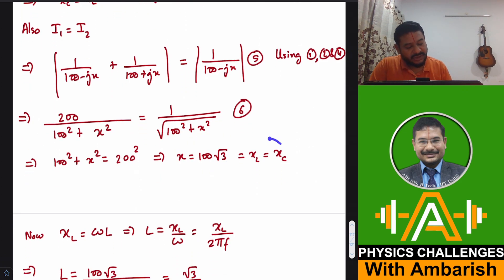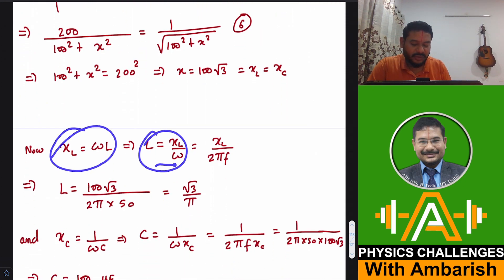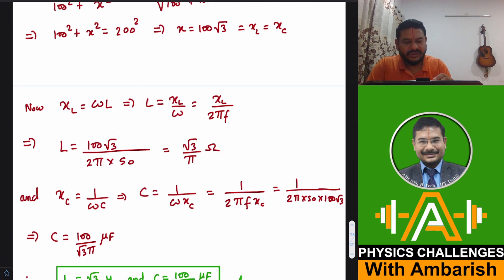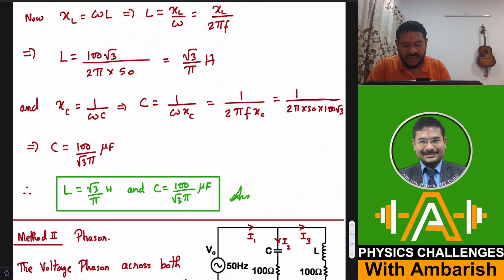So X comes out to be 100 root 3. So therefore reactance of inductor as well as reactance of the capacitor are 100 root 3. Now it's just a matter of putting XL is equal to omega L and XC as 1 by omega C. So XL is omega L. So L is XL upon omega, XL upon 2 pi F, frequency is given. So inductance is simply root 3 by pi Henry. And similarly, XC is nothing but 1 by omega C. So I can say C is nothing but 1 by omega times XC, that is 1 by 2 pi F of XC. Put the values and you get C as 100 upon root 3 pi microfarad. So that's our answer using the complex numbers.